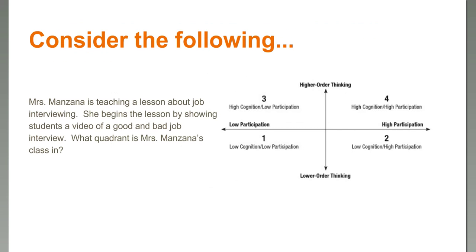To get familiar with the quadrants, let's do an exercise. Mrs. Monsana is a teacher teaching a lesson about job interviewing, and she begins the lesson by showing students a video of a good and bad job interview. What quadrant is she in? Those of you that said one are correct — the students are passive recipients watching a video, they're not participating, which is an example of quadrant one.